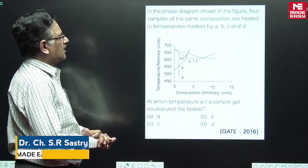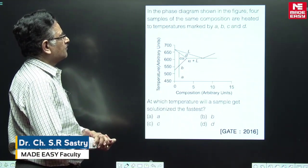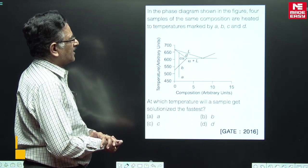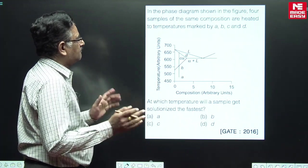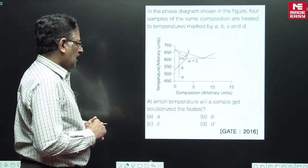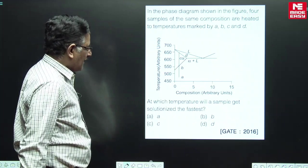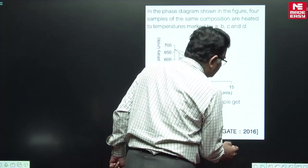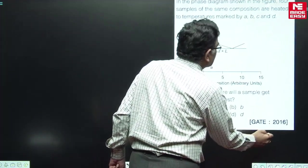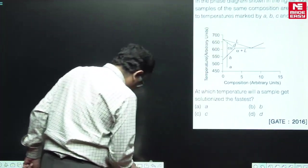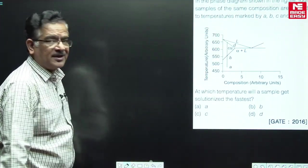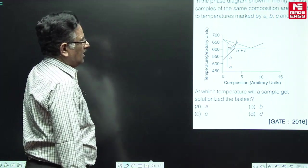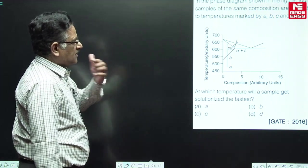In the phase diagram shown in the figure, four samples of the same composition are heated to temperatures marked by A, B, C, and D. At which temperature will a sample get solutionized the fastest? Let us try to understand this question, which was given in GATE 2016.